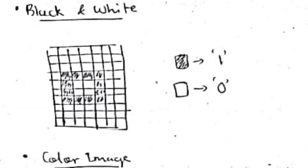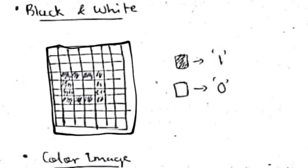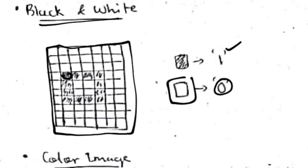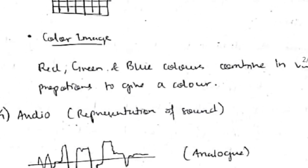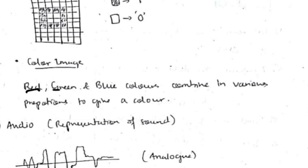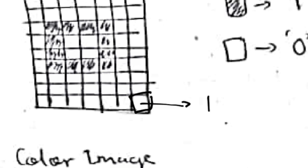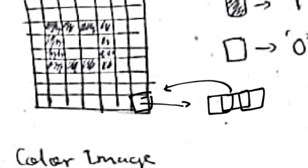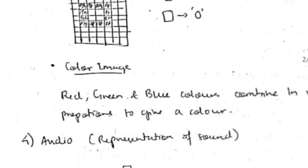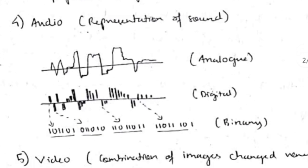For a black and white image, the display screen is divided into grids. If a pixel is black, a 1 bit is stored at that position; if white, a 0 is stored. For color images, all colors are combinations of red, green, and blue. For each pixel, bits specify the ratio in which red, green, and blue are mixed, and that ratio determines the color shown. Audio comes in two types: analog, which is the normal signal used in daily life, and digital, which is used for storage purposes.